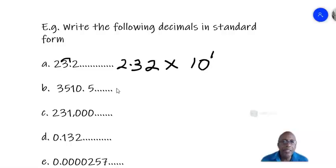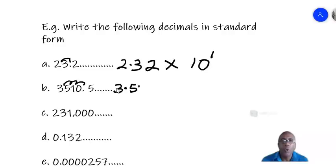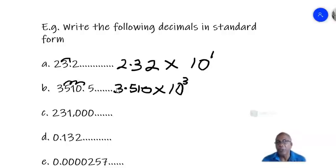For example b, 3510.5 — we have to move the point backwards one, two, three places to get 3.5105. So that is times 10 to the power of three — the same number of places you moved the point backwards. So 3510.5 in standard form is 3.5105 times 10 to the power of three.